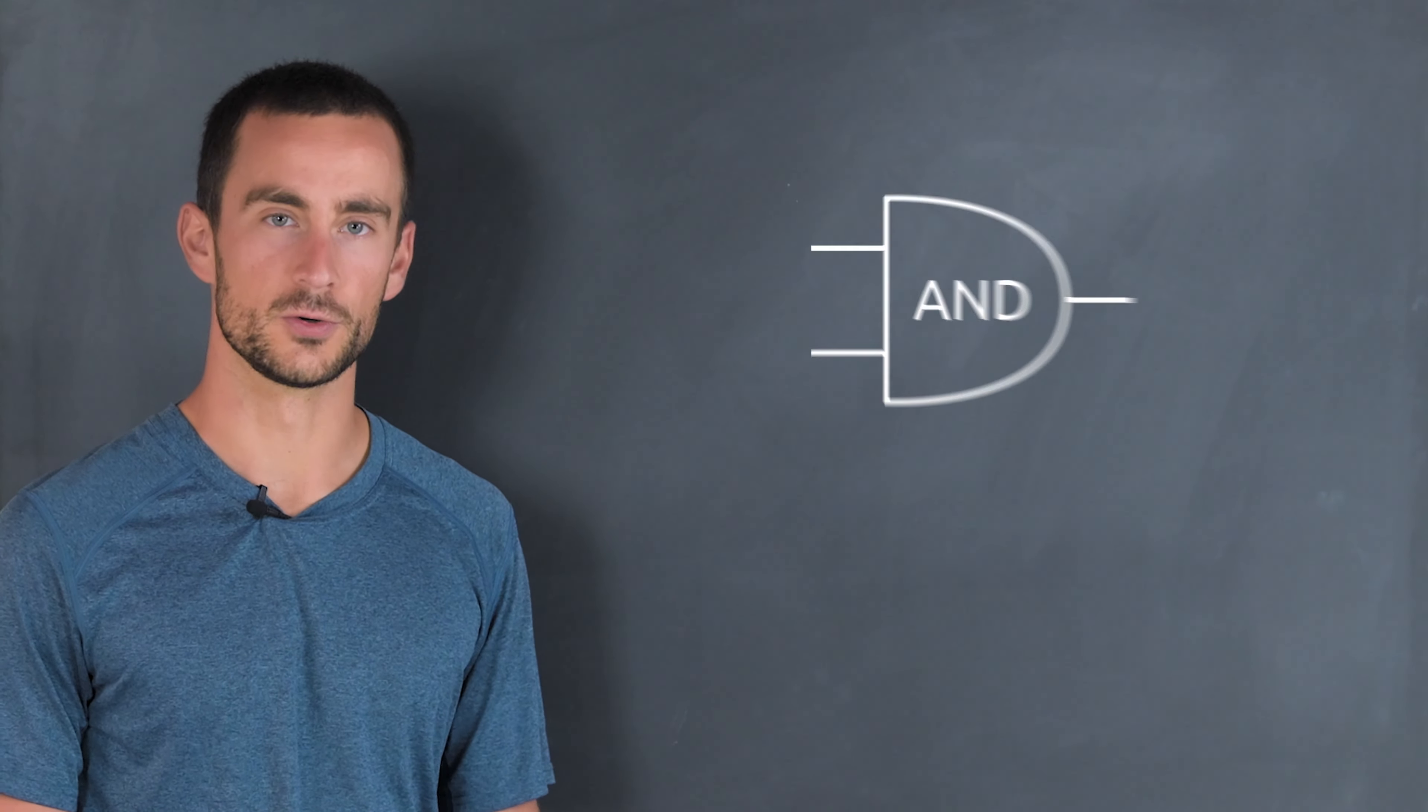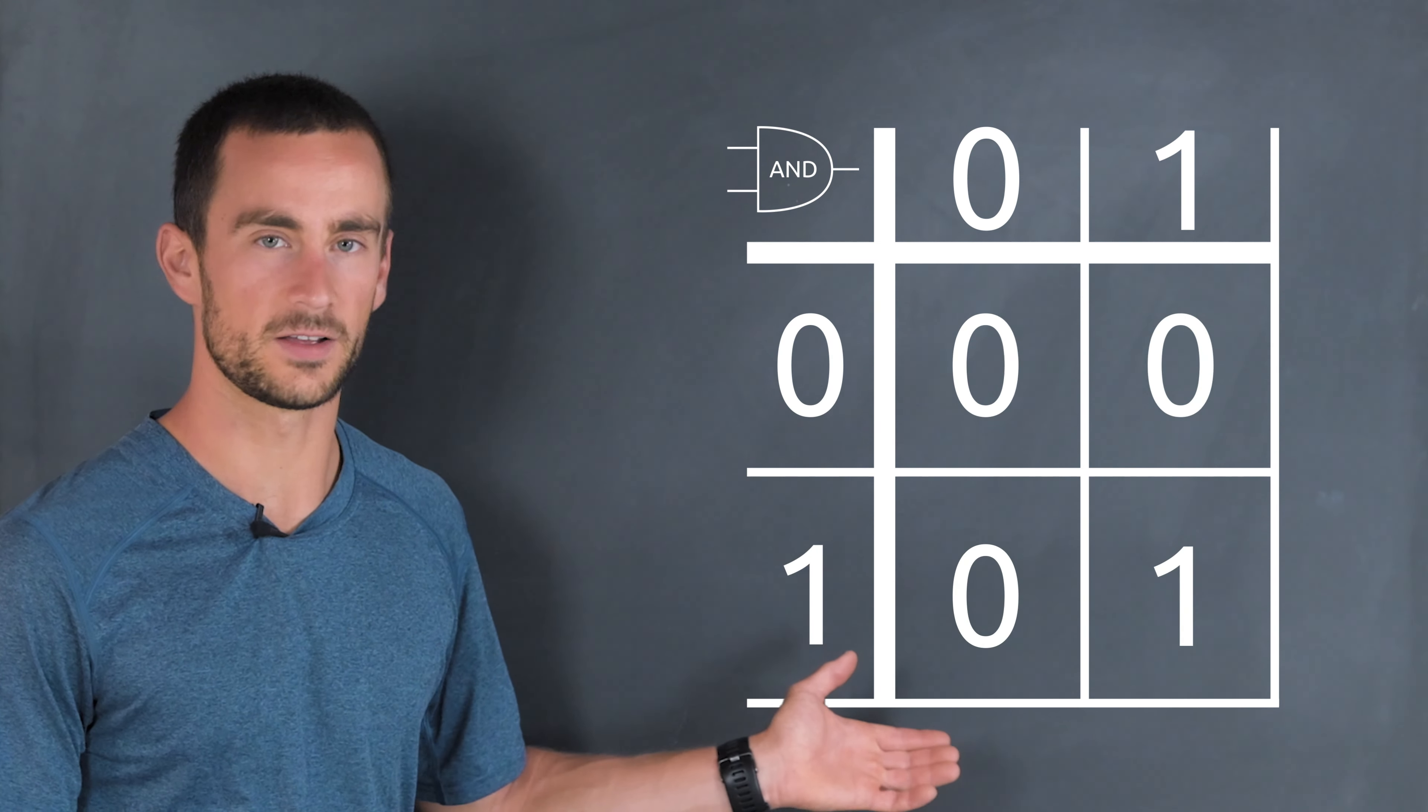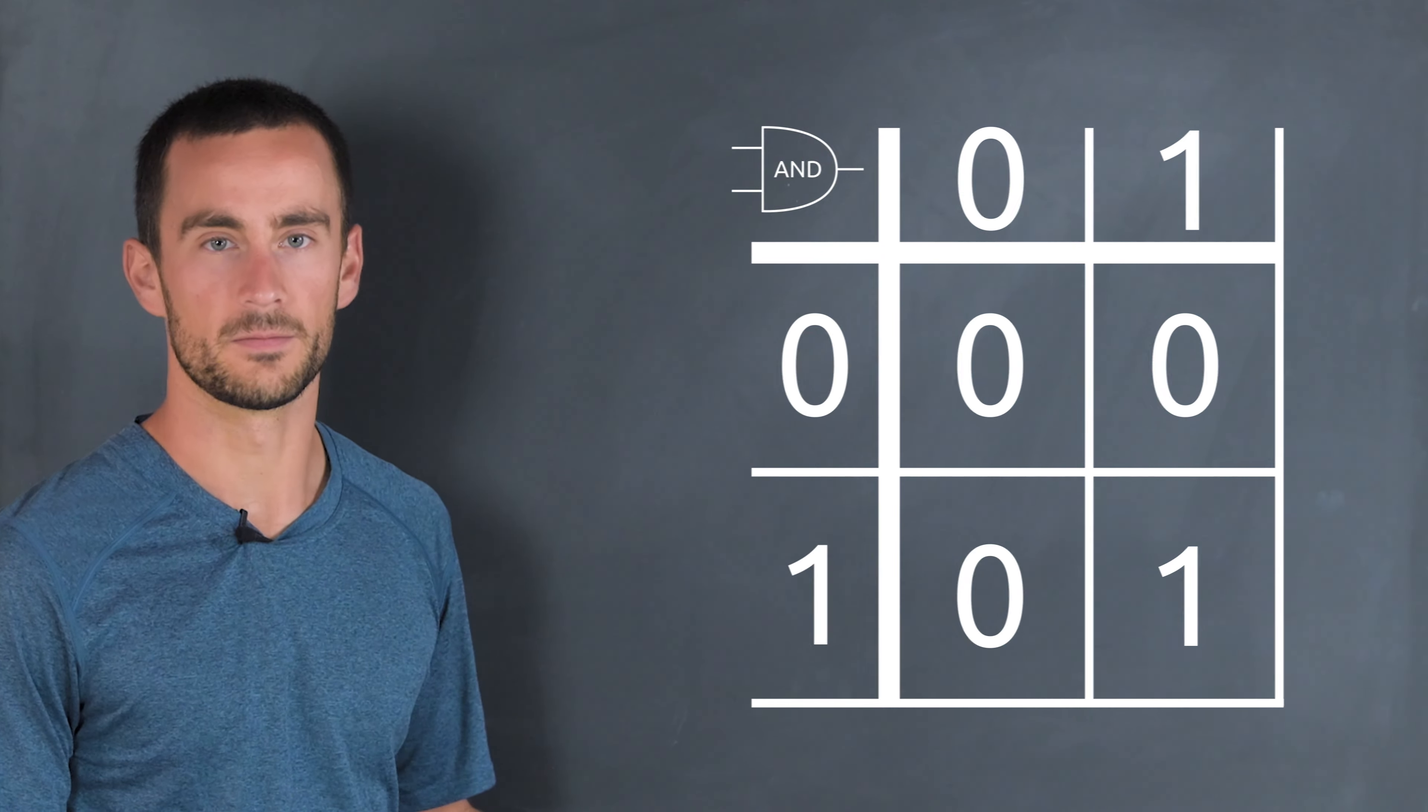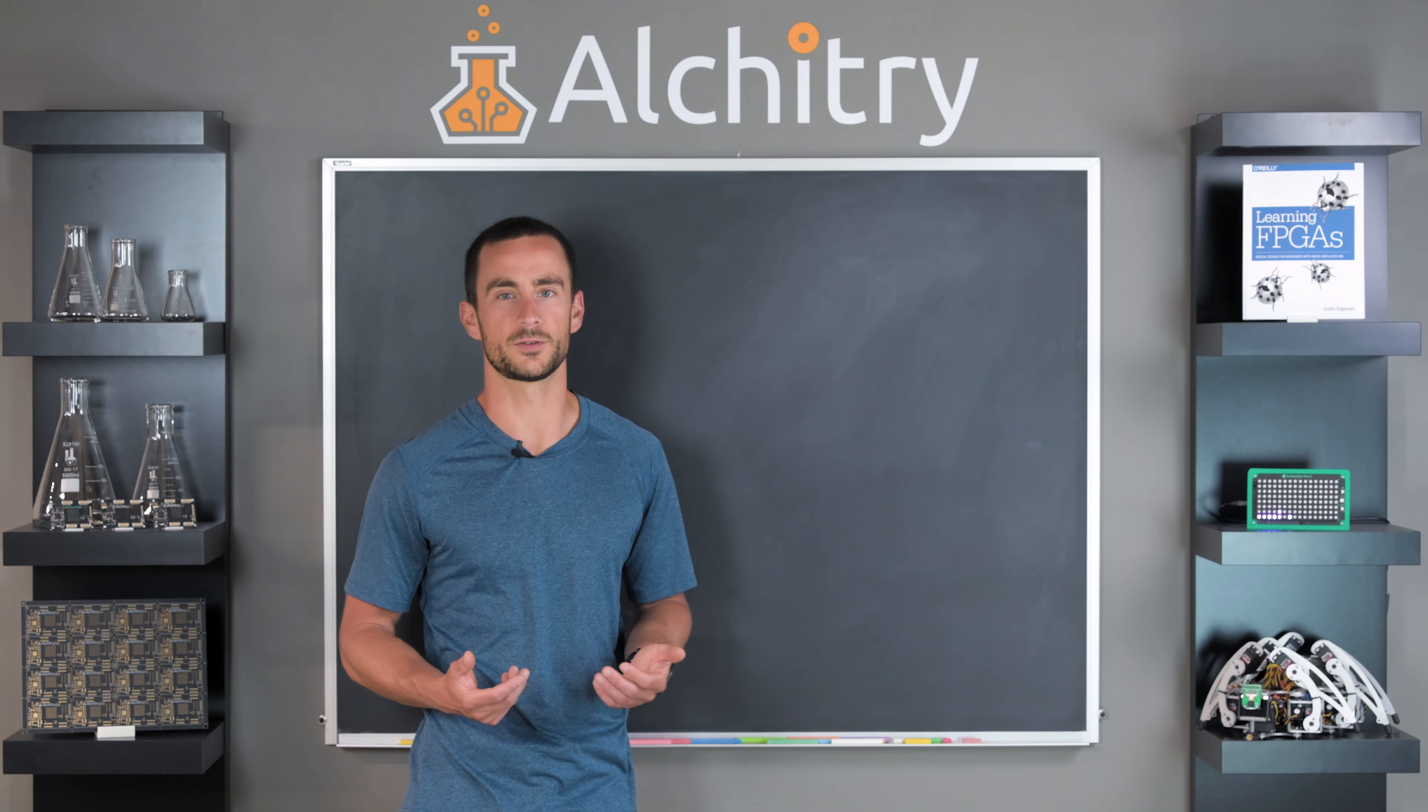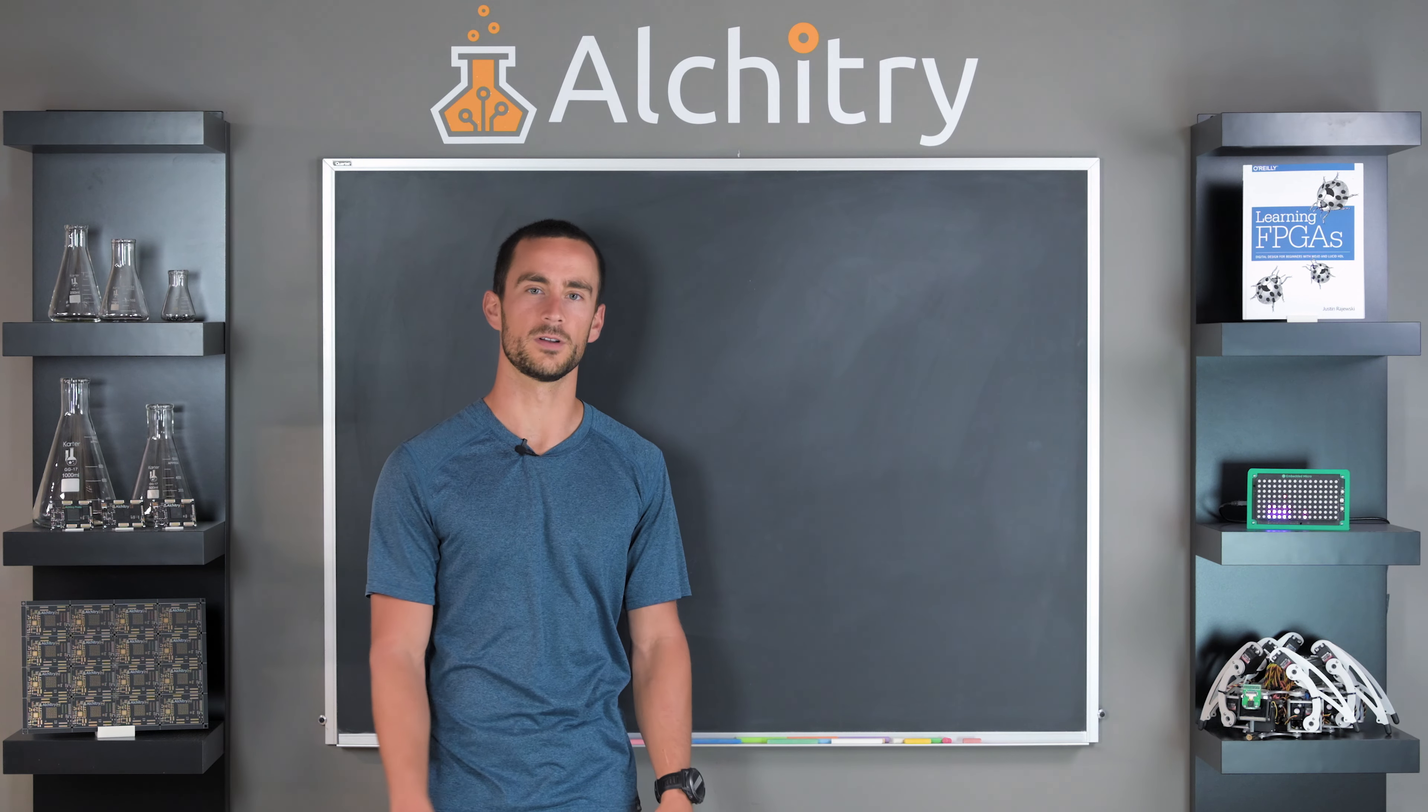We can show this in what is known as a truth table. On the top and side of the table, we can list the possible inputs. On the inside of the table, we can list the values that correspond to those inputs. So here we can see that the output is only 1 when the first input AND the second input are 1. Note that we're already abstracting away how this circuit is implemented. In practice, an AND gate could be implemented with a handful of transistors, but this really isn't important to us now. We get to forget about all the messy real world issues and live in the perfect world of zeros and ones.